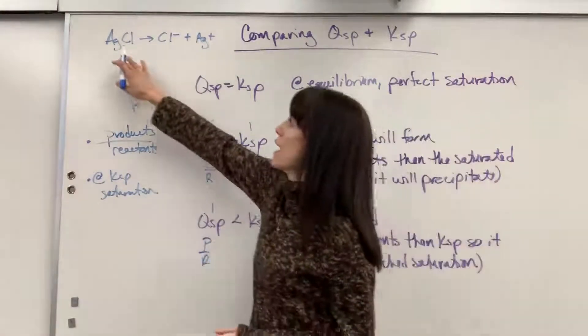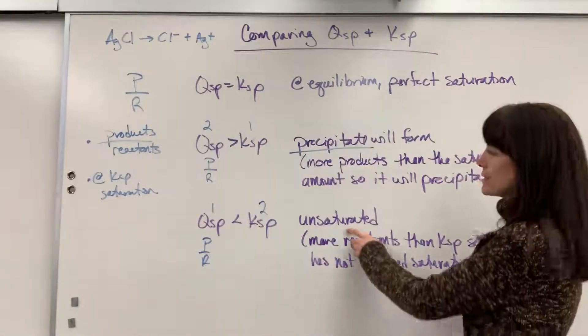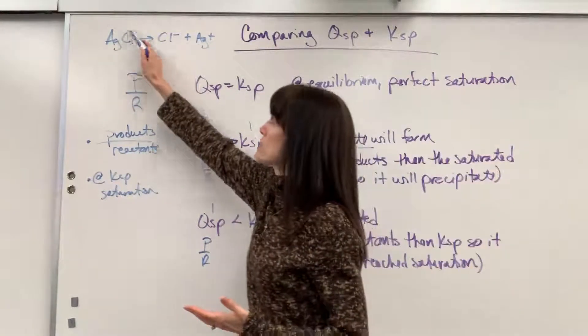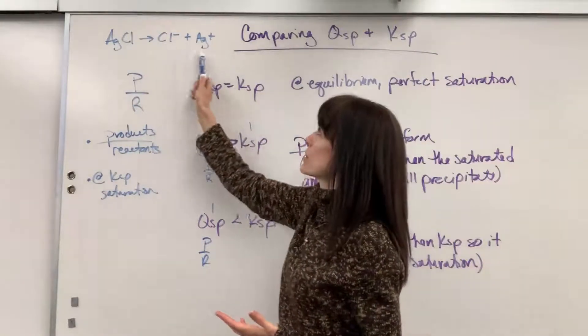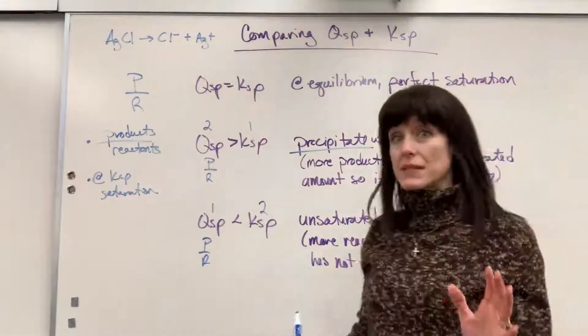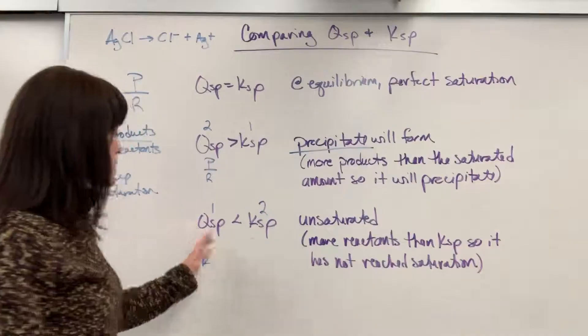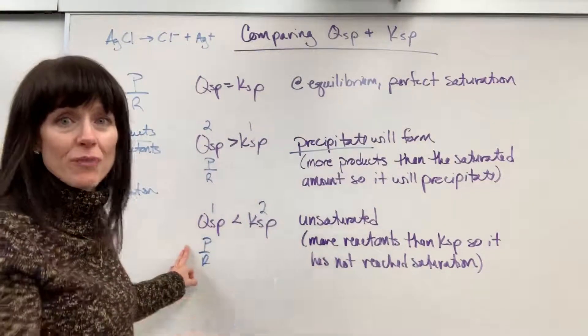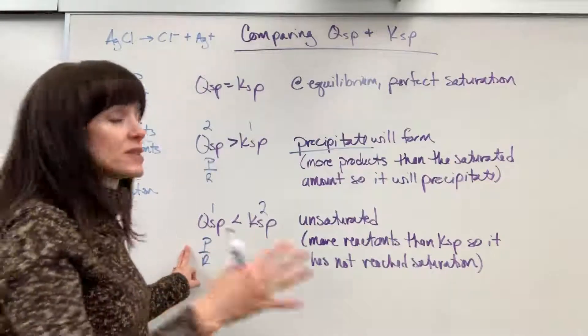If I have more reactants, that means it's unsaturated. It means, oh, if I have more sitting here, I can actually dissolve more of those ions. So your big takeaway on this, if QSP is less than KSP, you have more reactants. That means, hey, you can dissolve more. To reach equilibrium, you can dissolve more.